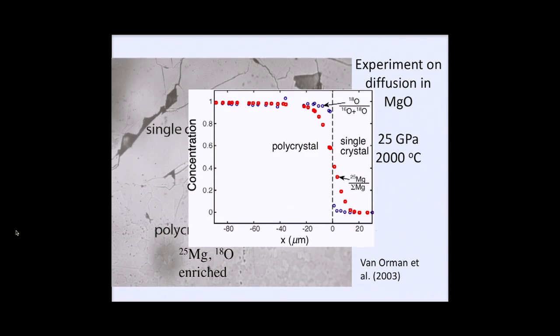We did some of the first experiments on diffusion in Earth's lower mantle materials under very high pressure, going back more than a decade ago. We're trying to determine the diffusion rates of atoms in this material. We started with a single crystal of magnesium oxide — the second most abundant mineral in the lower mantle — because you can buy big crystals of it cheaply, it's stable at low pressure, and you can look at pressure dependence. We took a single crystal of normal isotopes and placed it next to a polycrystalline sample enriched with magnesium-25 and oxygen-18. After compressing and heating the sample for hours, atoms hop around and you get mixing of the isotopes.